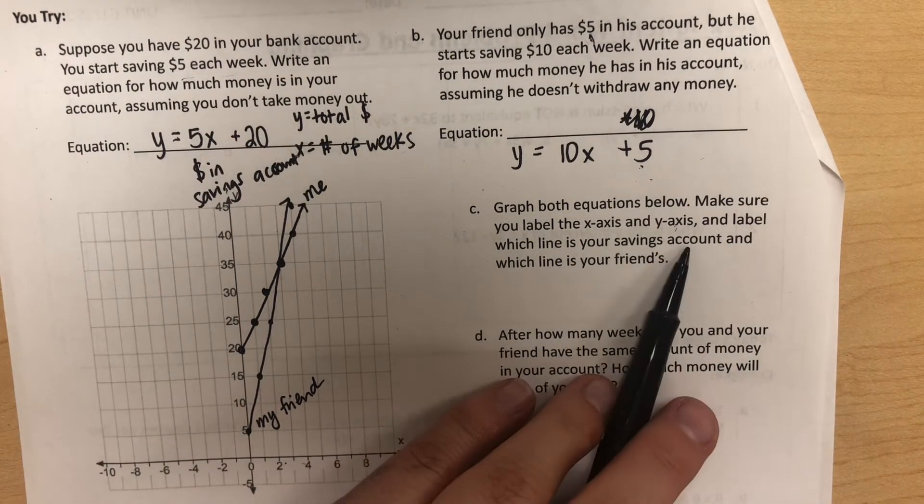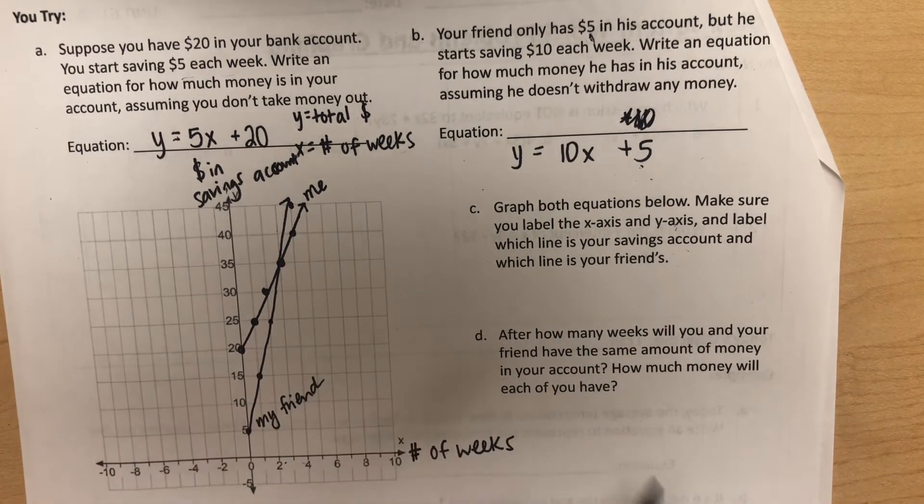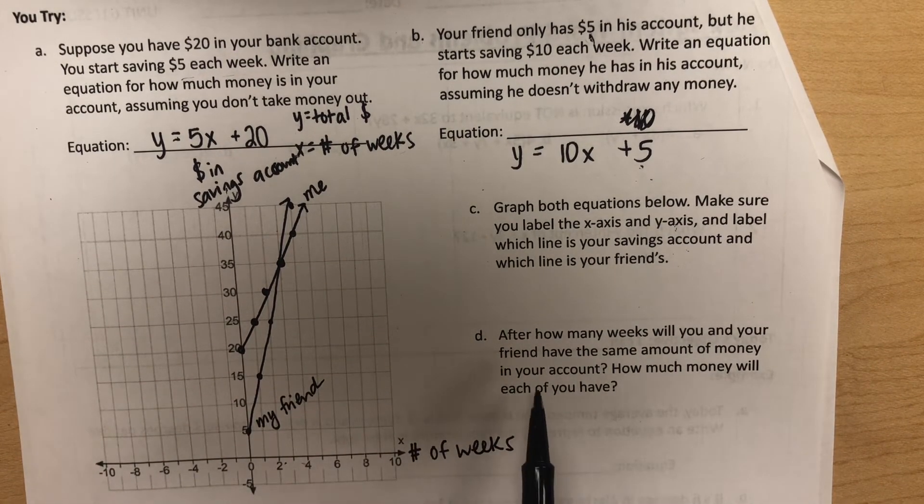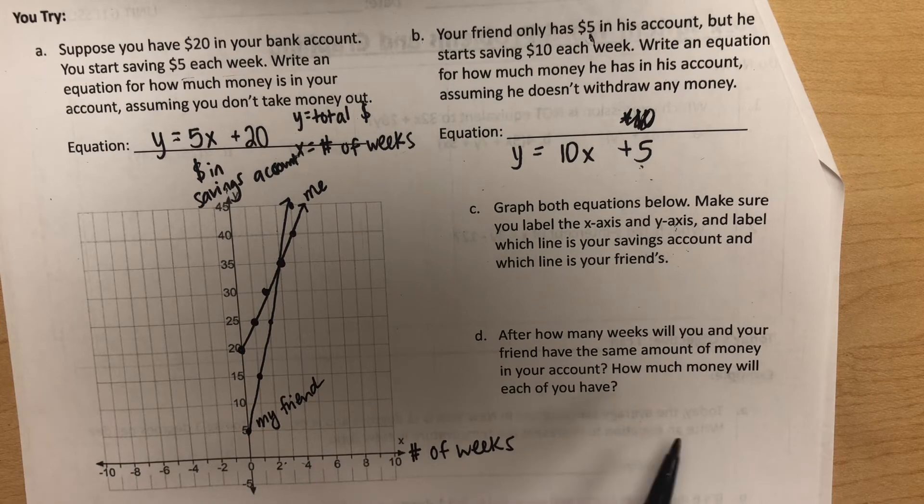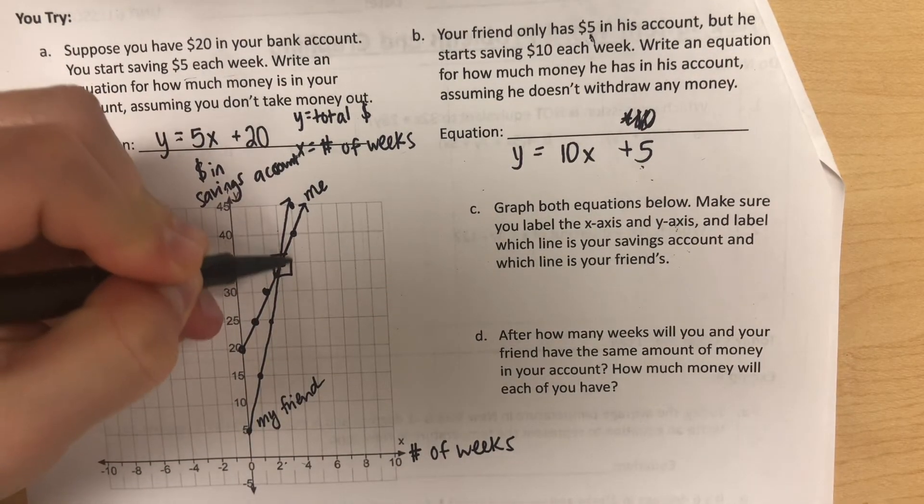We already labeled which line is our savings account and our friend's savings account. The last part of this question asks, after how many weeks will you and your friend have the same amount of money in your accounts? How much money will each of you have? As we were graphing, we've got this point right here.